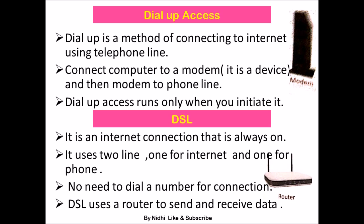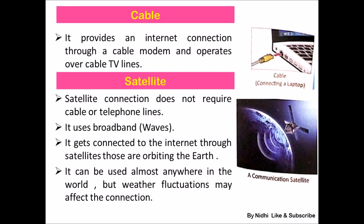The router, shown in this picture, is used to send and receive data. The modem is also shown in the picture. The next type of connection is cable, which provides an internet connection through a cable modem and operates over cable TV lines.